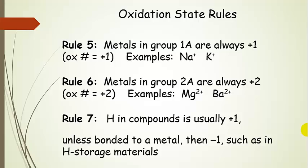Rules 5 and 6: metals in Group 1A are always in a plus 1 oxidation state, whether they're in a compound or not. Metals in Group 2A are always in a plus 2 oxidation state. Notice this is the same as the charge — but we're saying that's an oxidation state in a compound. It is the same as the charge on the ion, which is handy.